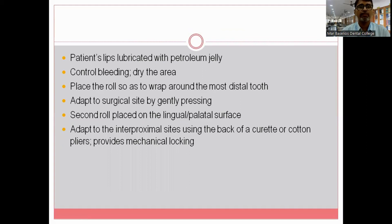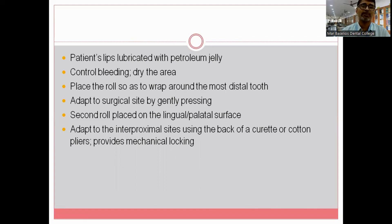Prior to applying the dressing, lubricate the patient's lips with petroleum jelly or Vaseline, because otherwise the dressing will stick to the patient's face — especially for male patients with a mustache or beard, it will be difficult to remove later. Also, you should not use a periodontal dressing to control bleeding; you must control the bleeding prior to applying it. Dry the area before placement.